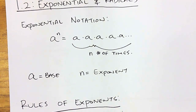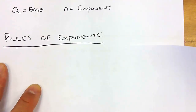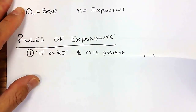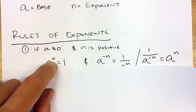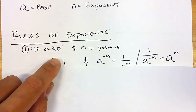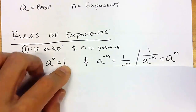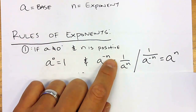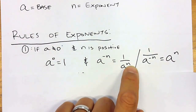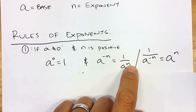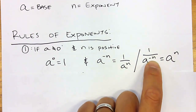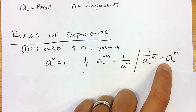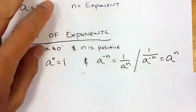There are rules of exponents, and we're going to cover them really quickly. Most of this you guys already know. If a is not 0 and n is positive, then anything to the 0 power equals 1. Whenever you have a negative exponent, all we're going to do is flip it and put it in a denominator, and then that exponent would be positive. Vice versa — if you have a negative exponent in the denominator, you flip it and put it in the numerator as a positive.